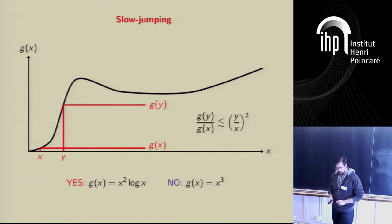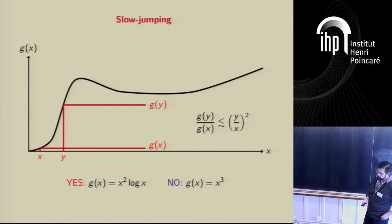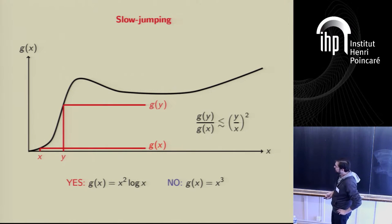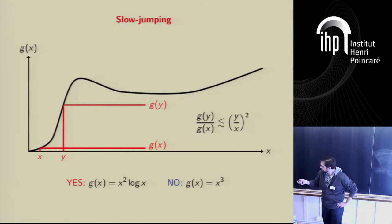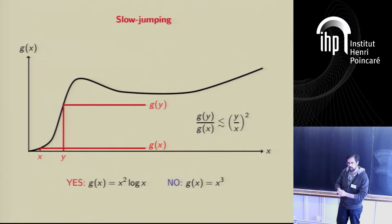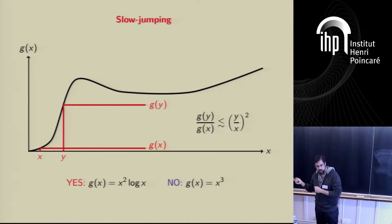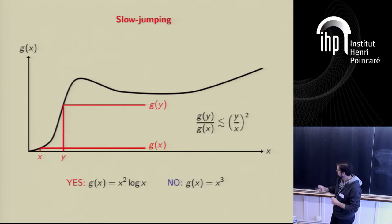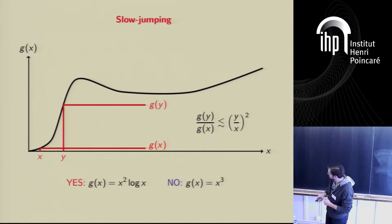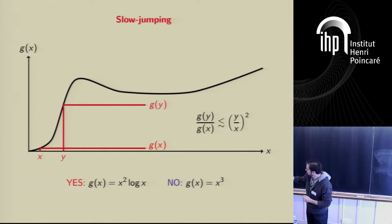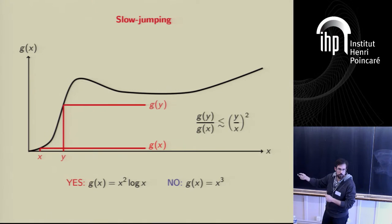The first property is called 'slow jumping.' Roughly, a function is slow jumping if it never grows faster than the quadratic — it's growing like the quadratic or slower. What this means is that if y is the biggest frequency in the stream and it's a g heavy hitter, then it's also going to be an F2 heavy hitter. Of course there's no need that a heavy hitter be the largest frequency, because the function can decrease.